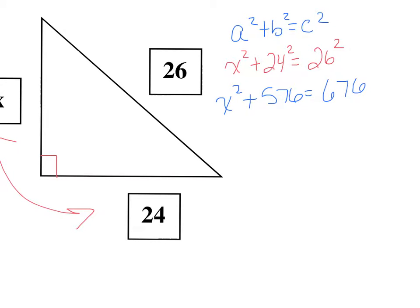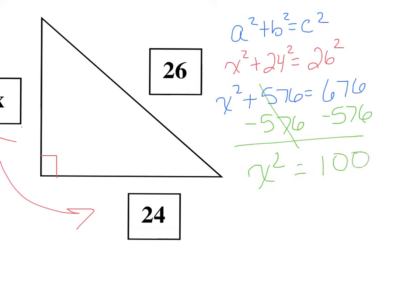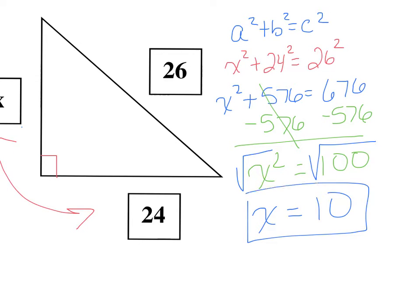We're solving for x, so we subtract 576 to isolate x. x squared equals 676 minus 576, which is 100. To remove the square, we use the square root — the square root of x squared is x, and the square root of 100 is 10. So x equals 10.